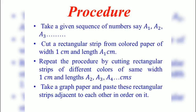Procedure: Take a given sequence of numbers say A1, A2, A3 and so on. Cut a rectangular strip from colored paper of width 1 cm and length A1 cm. Repeat the procedure by cutting rectangular strips of different colors of same width 1 cm and lengths A2, A3, A4 and so on. Take a graph paper and paste these rectangular strips adjacent to each other in order on it.